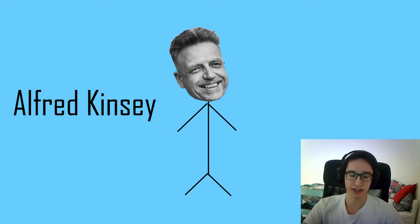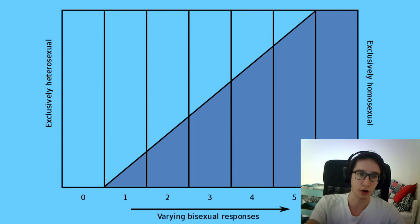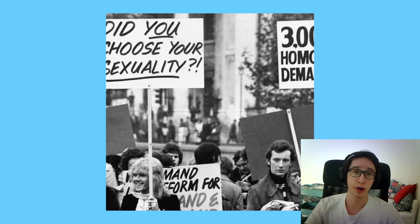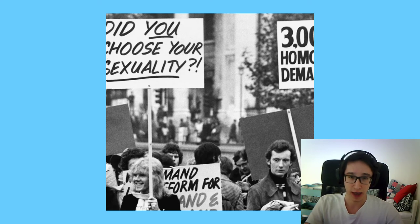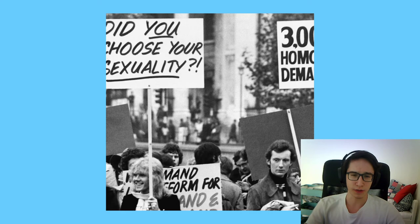Kinsey also came up with his own scale of sexuality, stating that we exist on a spectrum between heterosexuality and homosexuality — that we cannot be exclusively one or the other, and that we can be just a little bit gay or maybe more. His research led to the sexual revolution of the 1960s and 70s, which brought the normalization of nudity, sexuality, pornography, contraception, and widespread public conversation about sex and sexuality.